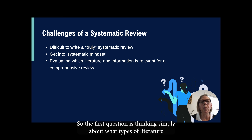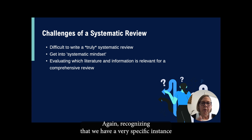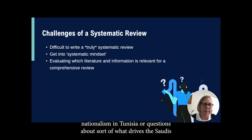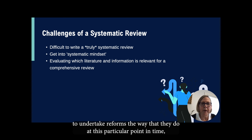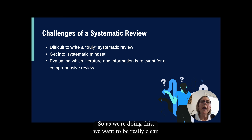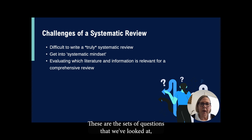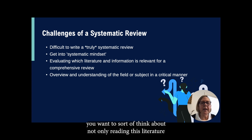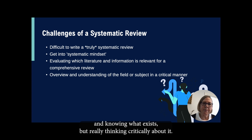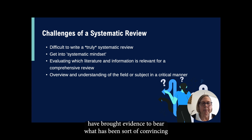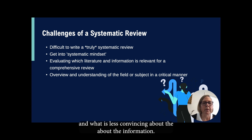The first question is thinking about what types of literature and information are going to be relevant for your review. Recognizing that we have a very specific instance and question in mind — nationalism in Tunisia, what drives the Saudis to undertake reforms, or subnational variation in Yemen regarding girls' education — we want to be really clear about the sets of questions we've looked at and the ways we've understood the search. And we want to not only read this literature but think critically about it, understanding the ways in which people have brought evidence to bear and what is convincing or less convincing.